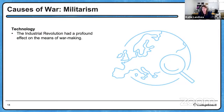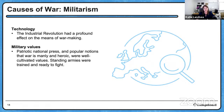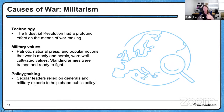Let's touch on militarism and military technology. The Industrial Revolution — specifically the Second Industrial Revolution — has had a huge effect on the means of war-making in terms of weapons. We have military values: strongly patriotic national presses and notions that war is manly and heroic. These are very well-cultivated values. Countries begin to have standing armies that are trained and ready to fight — an ideology that will cause World War I. We also have policymaking where secular leaders rely on generals and military experts to help shape public policy.